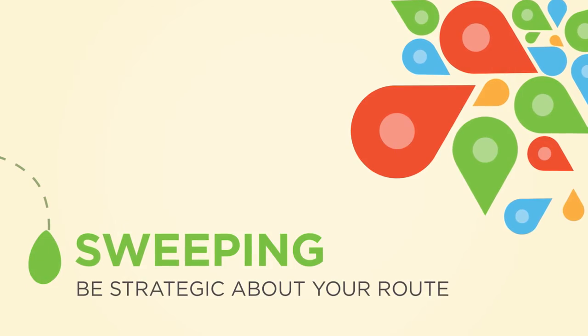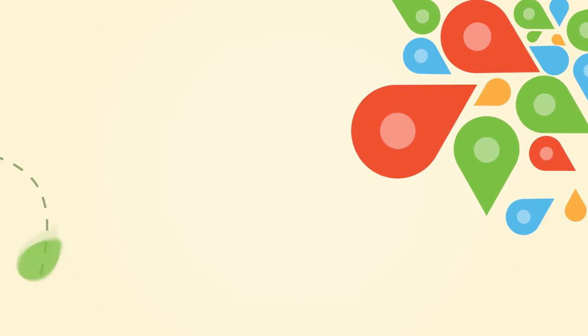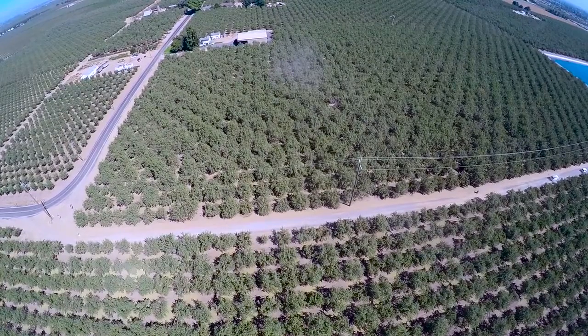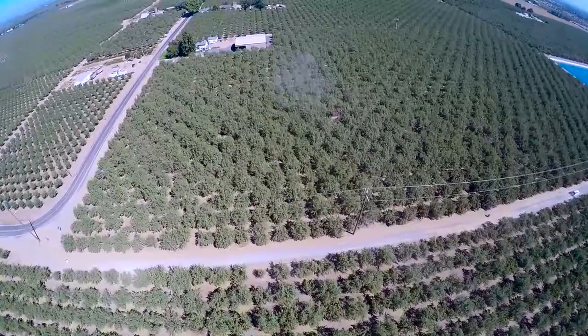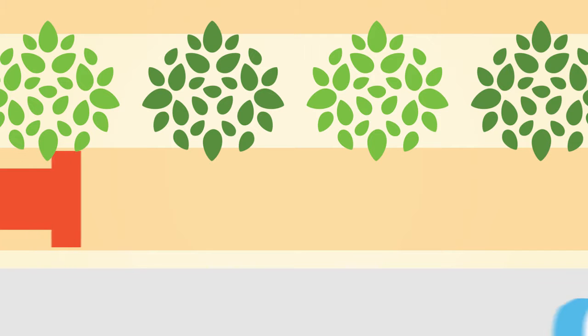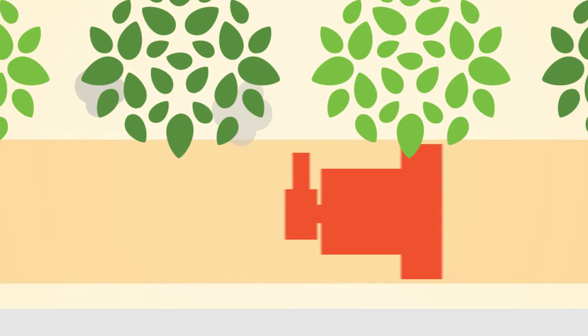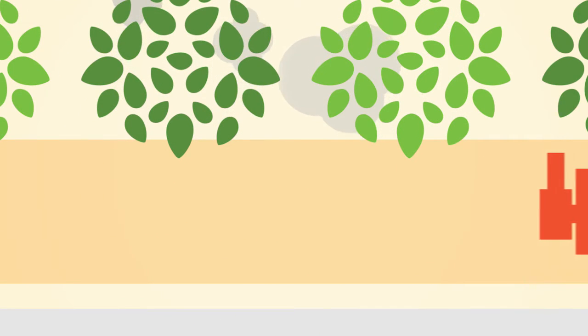Sweeping. Trees and their canopies act as filters, naturally helping to keep dust inside the orchard. Leverage them further by planning sweeper passes so that you travel in a direction that directs dust into the orchard instead of out.